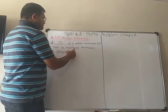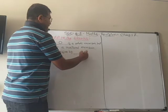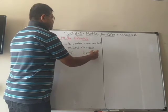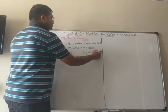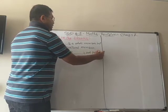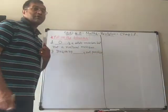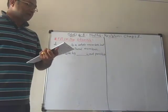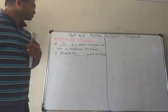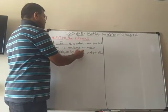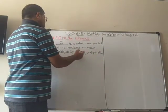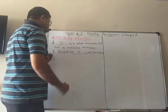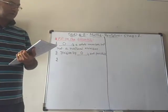Division by blank is not possible. We already know that when we divide by zero, the answer is not possible. So division by zero is not possible.